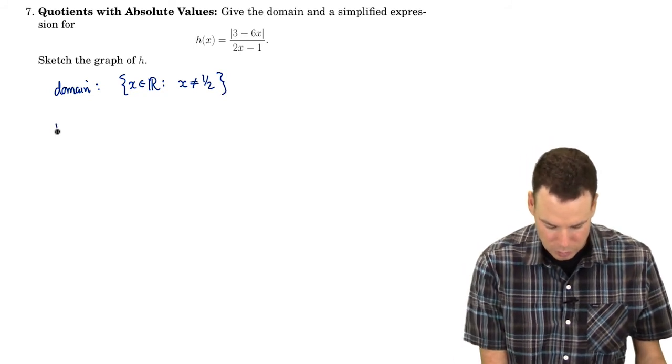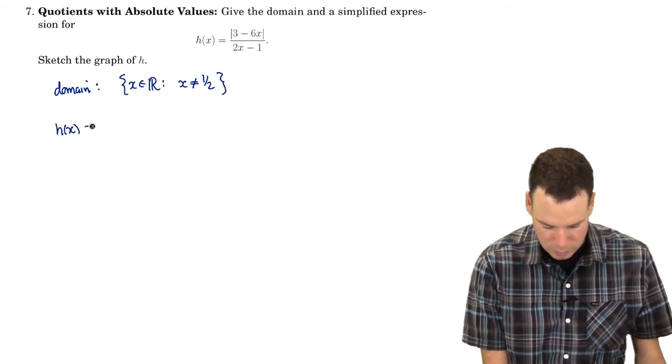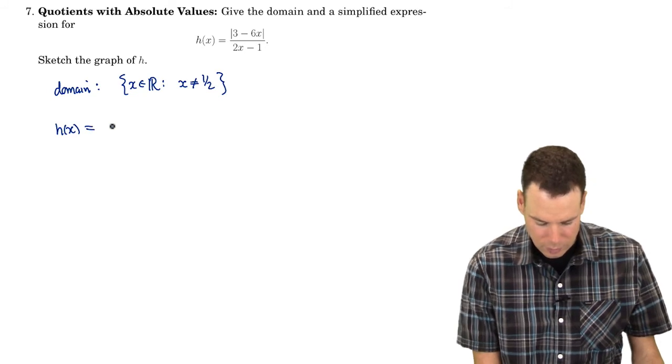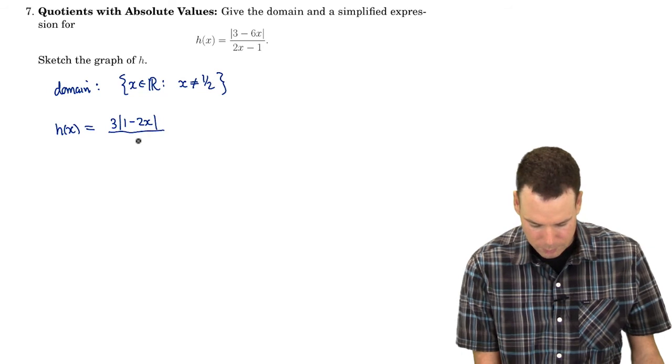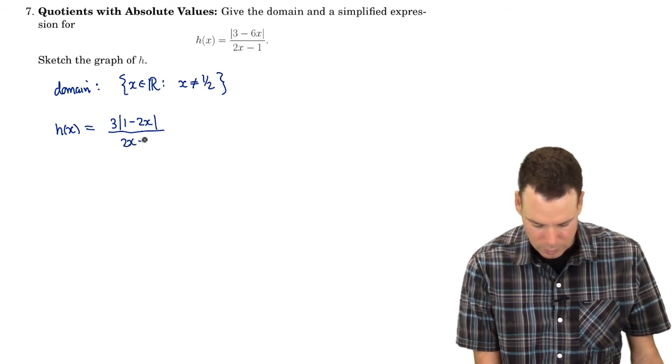What's a simplified expression? Well I can factor out a 3 from each term in the top and pull it all the way out of the absolute value sign.